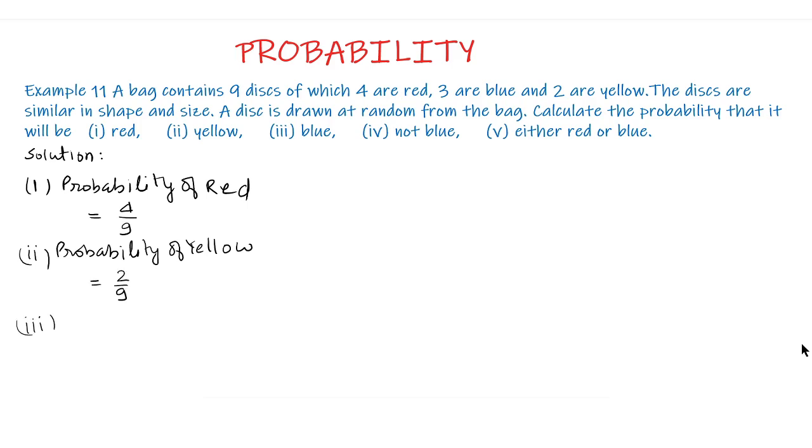Part 3, probability of blue: as there are 3 blue disks, therefore the probability of blue is 3 upon 9 which is equal to 1 upon 3.